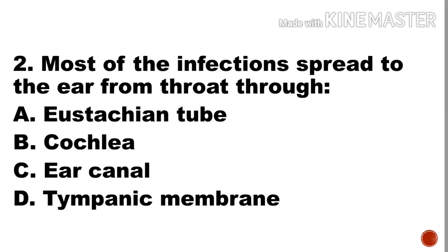Next question: Most infections spread to the ear from the throat through — a) eustachian tube, b) cochlea, c) ear canal, d) tympanic membrane. Option a, eustachian tube, is the right answer.